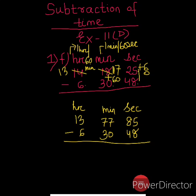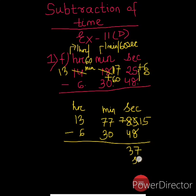Now we are ready to do the subtraction. 85 seconds minus 48 seconds: 15 minus 8 is 7, and 7 minus 4 is 3, so that is 37 seconds. Now 77 minus 30 will be 47 minutes. And 13 minus 6 will be 7, that is 7 hours. So our answer is 7 hours 47 minutes 37 seconds.